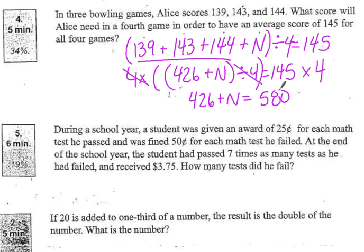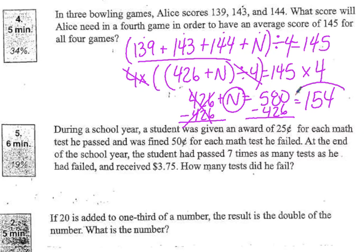Now I want to get N all by itself. In order to do that, I can subtract away this 426. If I do it on one side, I have to do the exact same thing on the other side to keep it even. These will cancel each other out, so I'm just left with N. And 580 minus 426 equals 154. So the answer to the question, she would have to bowl, in the fourth game, she would have to bowl a 154 to end up with the average of 145.